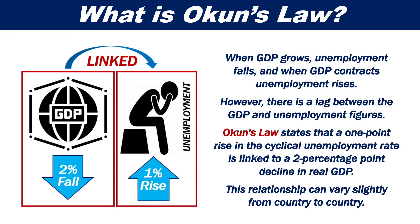Okun's Law states that a one-point rise in the cyclical unemployment rate is linked to a two-percentage-point decline in real GDP. This relationship can vary slightly from country to country.